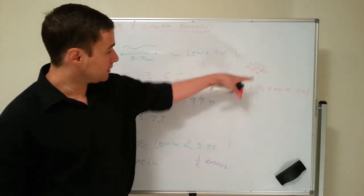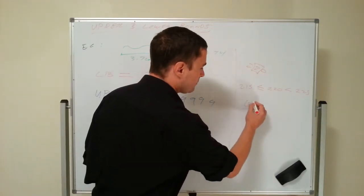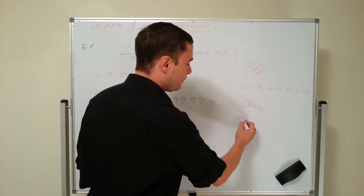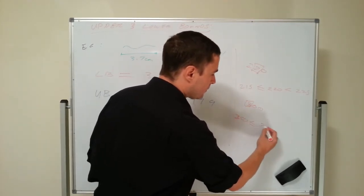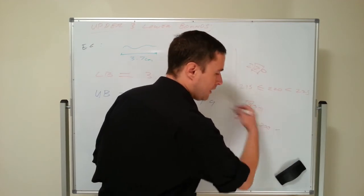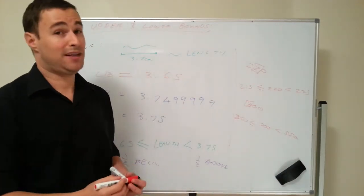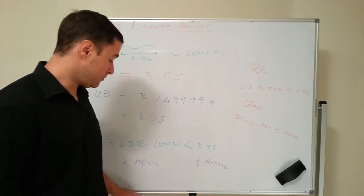If I was rounding, let's say, 300 to the nearest 100, well, the lower bound would be 250 less than or equal to, that's half below, 300, which is less than, and half above, 350. That's it. Very straightforward, easy way to remember.